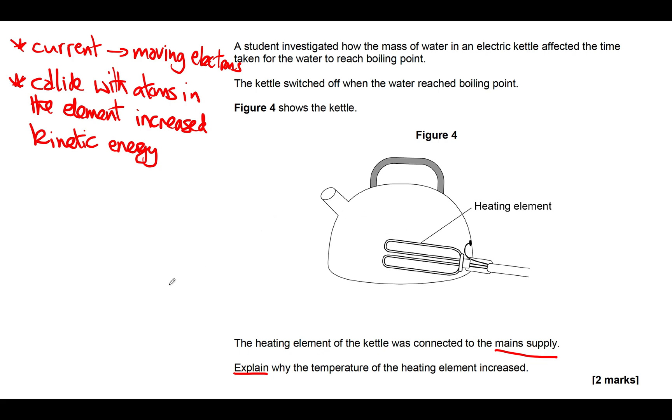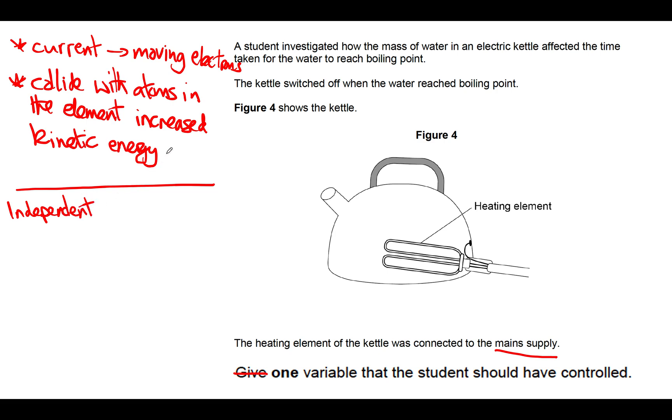Let's go on to the next question. It says give one variable that the student should have controlled. In this experiment, whenever they describe an experiment, you need to think about variables. You need to look at the information and think, okay, what was the independent variable? That's the thing that we change. The mass of water is the independent variable in this experiment. Then the dependent variable is the one that depends on that—in other words, the one that we measure. In this case, it was the time taken for the water to reach boiling point.